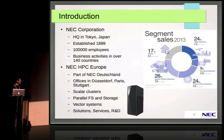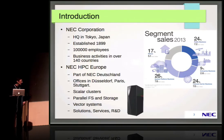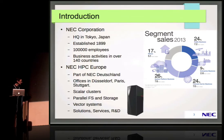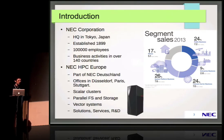I'm working for NEC. NEC is a 115-year-old company based in Japan with 100,000 employees. We have business activities in 140 countries, one of them is Germany. My business unit is NEC HPC Europe. We are part of NEC Deutschland, with offices in Düsseldorf, Stuttgart, and Paris. We sell scalar clusters, parallel file system solutions and storage, vector systems — the Essex ACE — and solution services, and we also do some research and development in Europe.